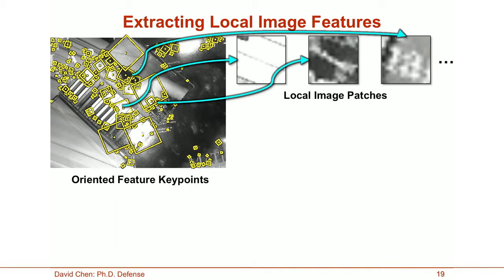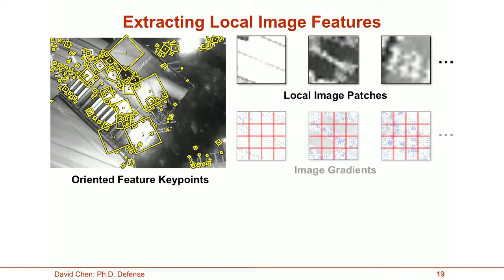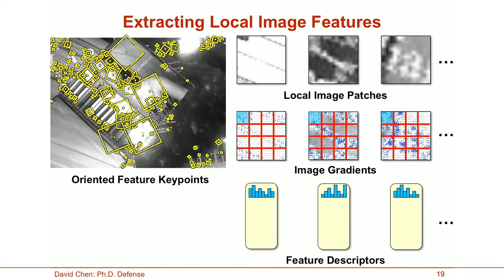From these oriented feature keypoints, we extract local image patches. We compute the image gradients for these local patches and further subdivide each patch into smaller spatial cells. For each spatial cell, we compute statistics from the image gradients to form a portion of the feature descriptor. By iterating over all spatial cells and concatenating their contributions, we obtain the overall feature descriptors.